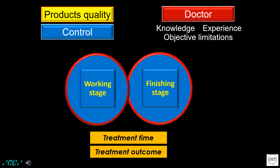The use of proven high-quality products is important to ensure bracket and wire quality. On the other hand, the doctor's skills and experience are the most important factor influencing the treatment from all points of view — control, progress, time, and outcome. There are also some objective limitations, which manifest during the treatment progress stage and later at the detailing stage. These two stages may require substantial treatment time and can influence the treatment outcome.